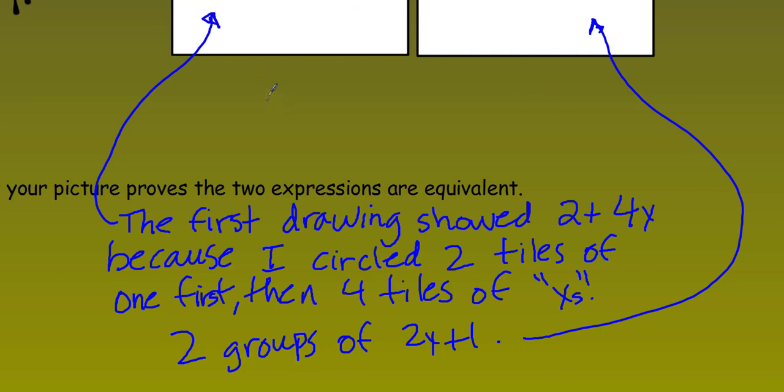Now it does say explain how your picture proves the two expressions are equivalent. Well, I think I would have to say how does it prove it? The first drawing showed two plus four X because I circled two tiles of one first. Then four tiles of one X. So the other one was two groups of two X plus one, and I circled them accordingly. So that kind of shows you how I did this through the drawings. So this proves it. Plus we do know that if you have two plus four X, that's going to equal two groups of two X plus one. Four X plus two. And that means the same thing.